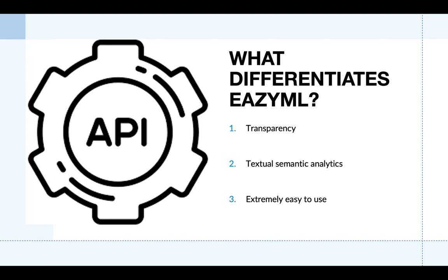Simply said, EasyML has the lowest barrier to entry of any platform currently on the market. For beginners, the graphical interface takes you through the entire process in a series of small, easy-to-follow steps. For the advanced user, APIs allow you to build a customized solution to get your project completed fast and accurately.